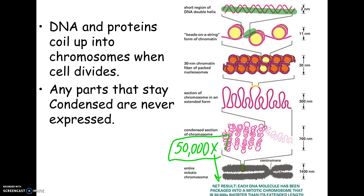When the cell is going to divide, that's when the DNA coils up into chromosomes, because we don't want any pieces to get lost. But when the DNA is coiled up — like me closing up my books and stacking everything — I can't do any work; everything's closed. But nothing will get lost going down the hall. When the cell is going to reproduce, the DNA coils into chromosomes.